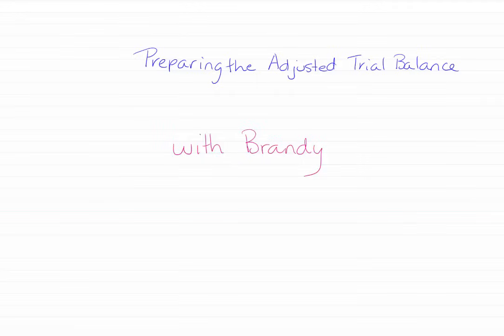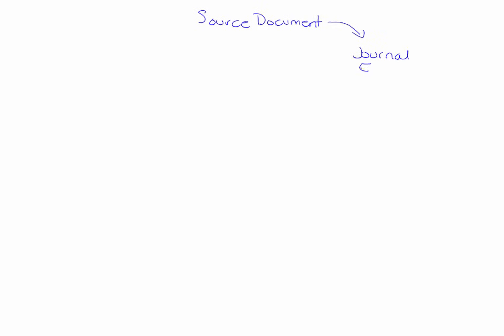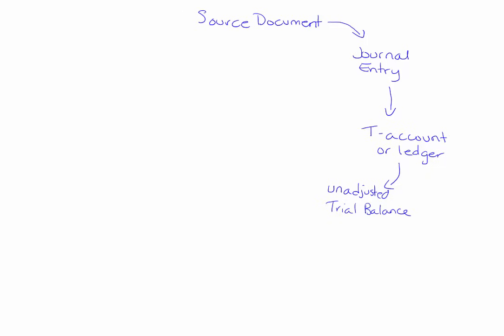Hi everyone, today we're talking about preparing the adjusted trial balance and I'm your instructor Brandy. So up to this point you've learned how to take a source document to a journal entry, to the t-account or ledger, to your unadjusted trial balance. Now today we're taking this even further, going from the unadjusted trial balance making adjustments to the adjusted trial balance. This is your last step before you make financial statements.